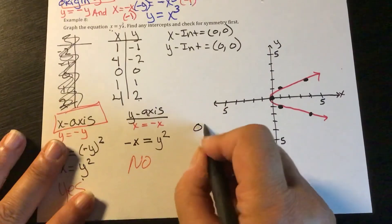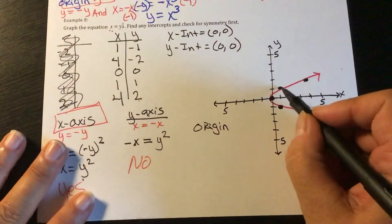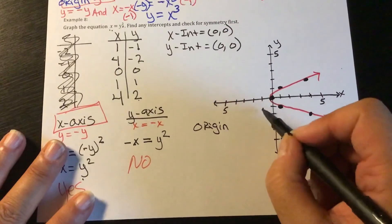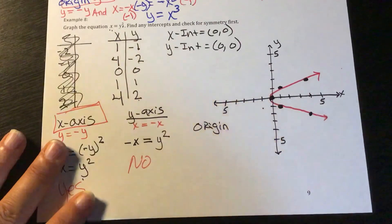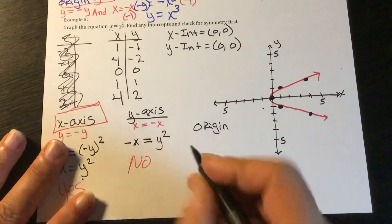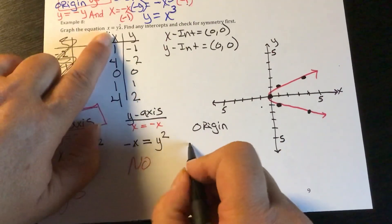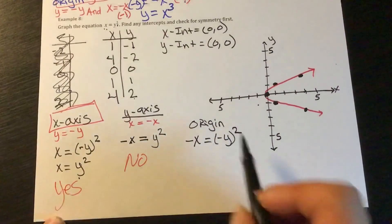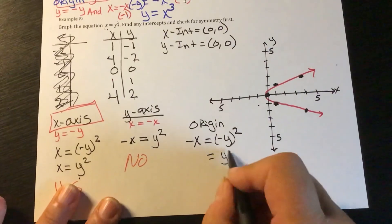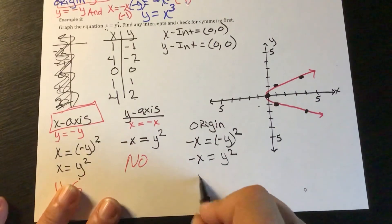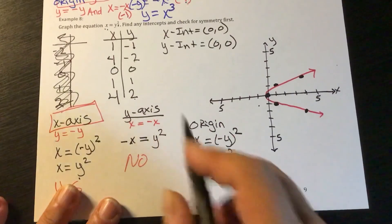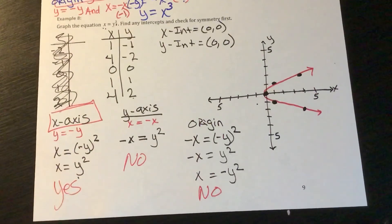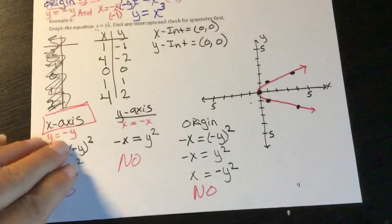And if I look at the origin — if I had symmetry about the origin, I would expect a reflected point on the other side, but I don't have that. Algebraically, I take x to negative x and y to negative y: negative y squared becomes y squared, and this is negative x. So x equals negative y squared, which is not the same as the original. So this does not have symmetry over the origin. And that's about it for this lesson.